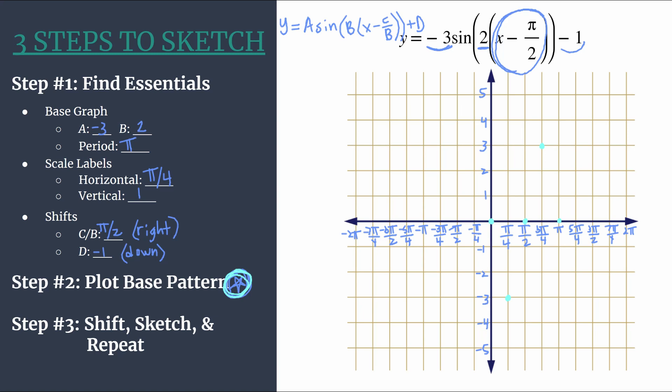From each of our light blue points or our base pattern points, we're going to move right π over two and down one. So you see π over two will be equal to two horizontal grid units. And then down one, that'll just be one vertical grid unit.